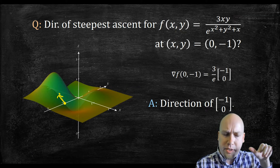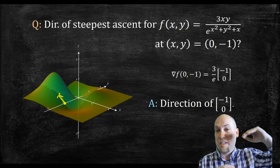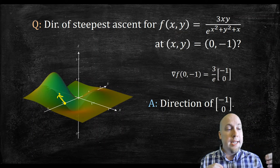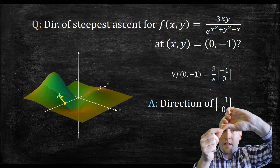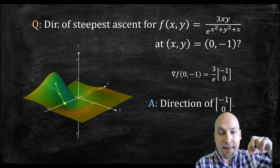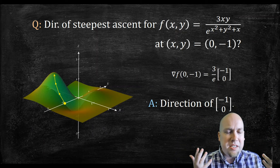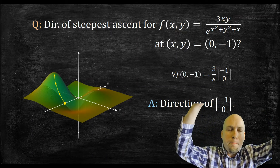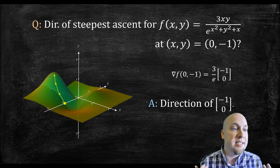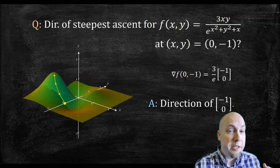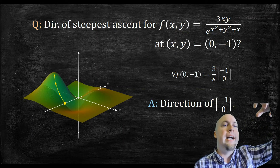A really nice feature of steepest ascent using the gradient like this is for maximization of a function. If you've got a multivariable function and you want to find where it's as large as possible — to find the top of a hill — you find the gradient, which points in the direction of steepest ascent, and walk in that direction for a little bit. Then find the gradient there and walk in that direction for a little bit, and repeat. Every time you do this, you're walking up as quickly as possible. This is a very commonly used method in practice, though it only finds a local maximum — the top of a nearby hill.